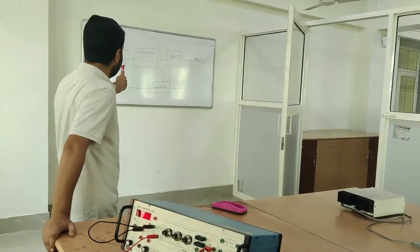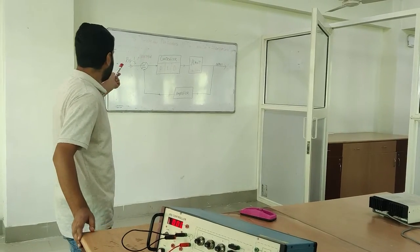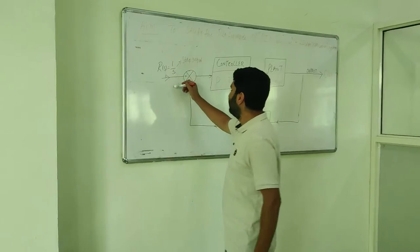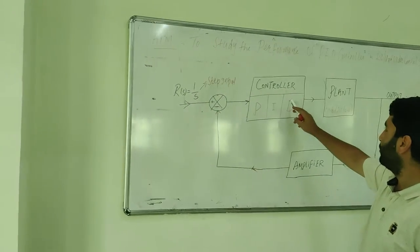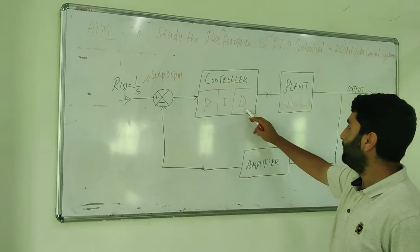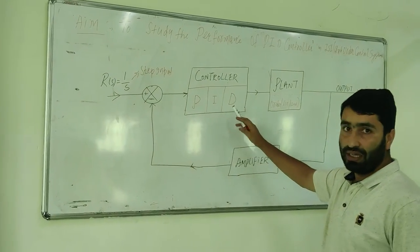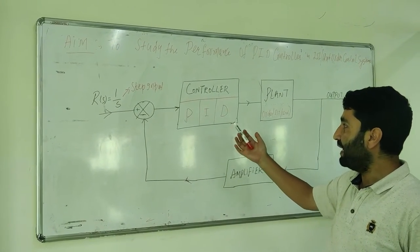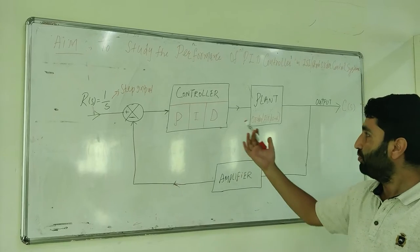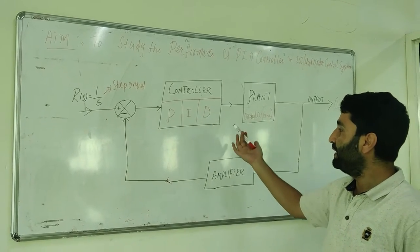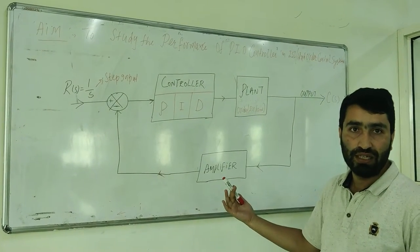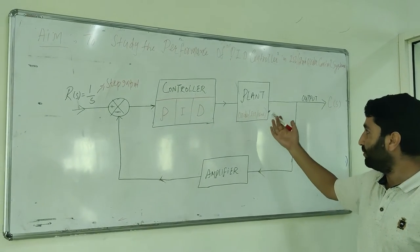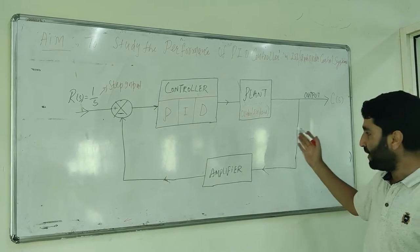You can also see the block diagram on the board. We have the step input here represented by S. We also have the controller — proportional, integral, and differential. We can use a combination of P plus I plus D, or we can use any combination of the three. We also have the plant, which we can make as a first order or second order system.